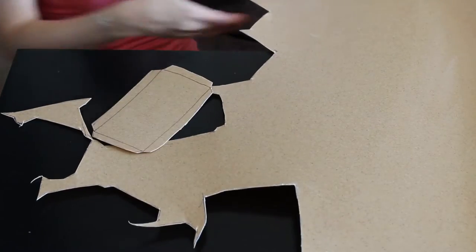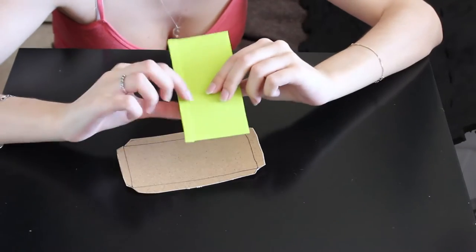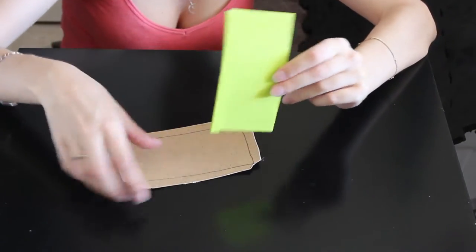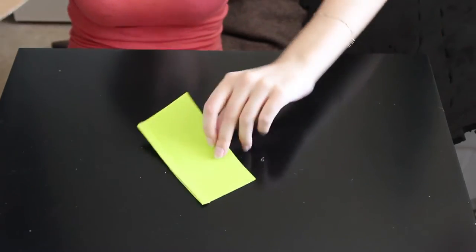So here we have it. This is our piece of worbla and this is our bracer that we're going to be cutting out. The detailing is already on it because we're going to put the worbla over and it'll form to this shape so you don't need to worry about putting it on afterwards.